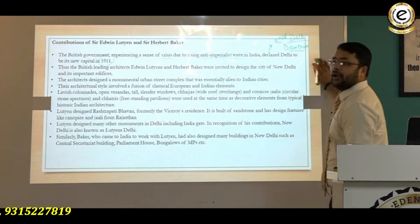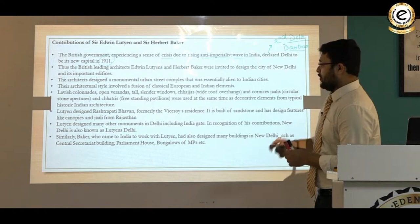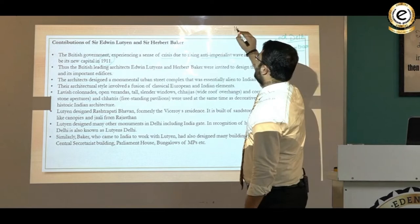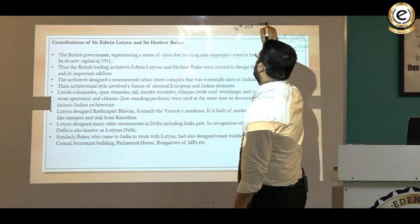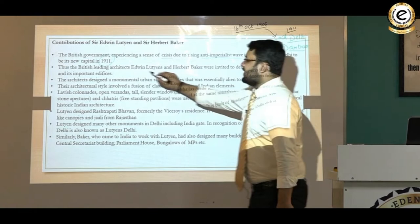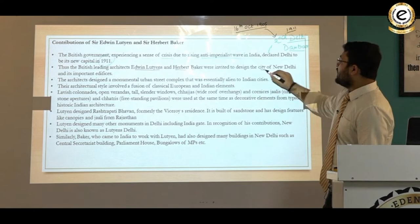At the Second Delhi Darbar, not only was the capital shifted to Delhi announced, but it was also announced that Bengal would not be partitioned. The partition of Bengal, which gave rise to the Swadeshi movement — enacted on 16th October 1905 — was declared invalid at the Second Delhi Darbar of 1911.